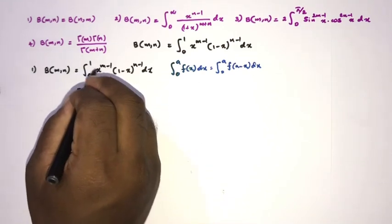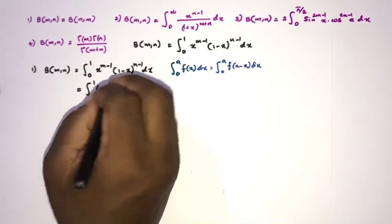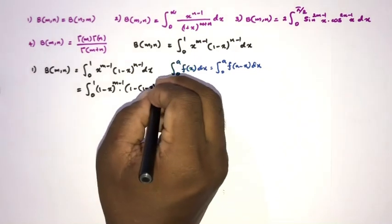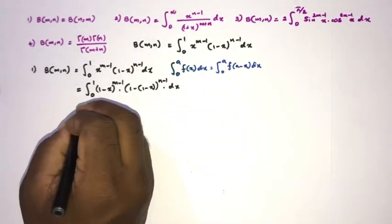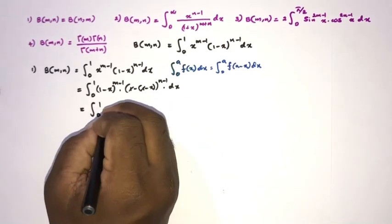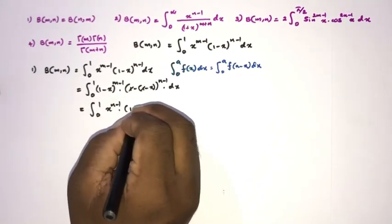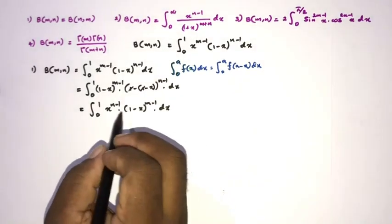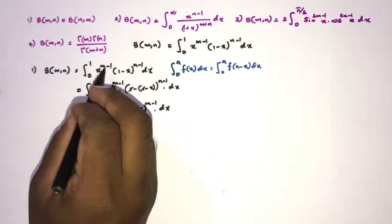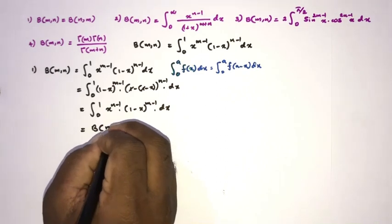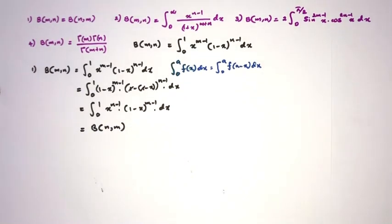Applying King's property, we replace x with (1-x), giving the integral from 0 to 1 of (1-x)^(m-1) times (1-(1-x))^(n-1) dx. The 1's cancel, leaving integral from 0 to 1 of x^(n-1) times (1-x)^(m-1) dx. This is the definition of the Beta function with m and n swapped, so this equals B(n,m). This completes the proof of the symmetry property.